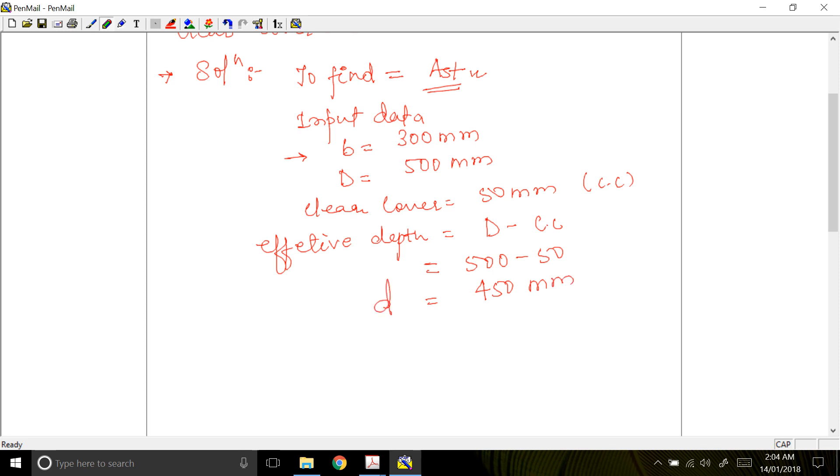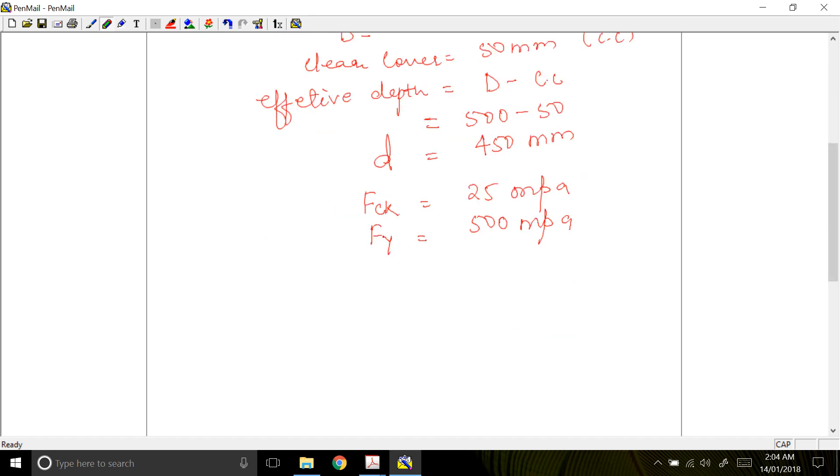Your grade of concrete given is 25 MPa. Grade of steel, Fy is 500 MPa. We have been also given the moment. This moment is working moment, not your design moment or factored moment. The moment given is 30 kNm.